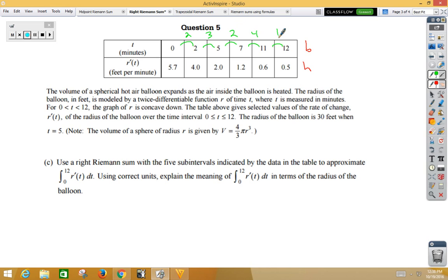Right Riemann sum, let's look down here. Use right Riemann sum with 5 subintervals, so n is 5 this time, using the data from 0 to 12. Again, we don't use our first height value, so our first Riemann rectangle would be 4.0 times our height of 2. Our second Riemann sum would be 2.0 times our height of 3. Our third rectangle would be 1.2 times a height of 2. Our fourth rectangle would be 0.6 times a height of 4. Our final rectangle would be 0.5 times a height or a base of 1.